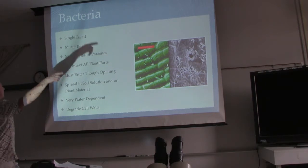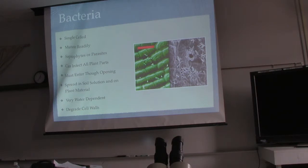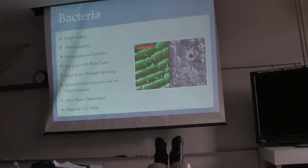Bacteria are saprophytes and parasites, just like fungi. They can affect all plant parts — roots, stems, seeds, fruits, everything. They must enter through an opening. If you rip a leaf or do any pruning, you're exposing the plant's outer layer to bacteria. So if you wound your plant for any reason, you have to take proper steps to make sure bacteria doesn't infest it after you're done.